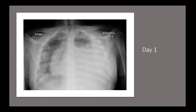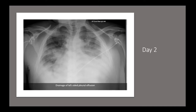Back to our patient to complete the story. His day one chest X-ray shows evidence of patchy shadowing in both lungs and a large effusion on the left side — no wonder he was so hypoxic. The next day, a chest drain was inserted and the effusion reduced in size, with ground-glass opacity and patchy shadowing visible throughout the rest of the lungs.